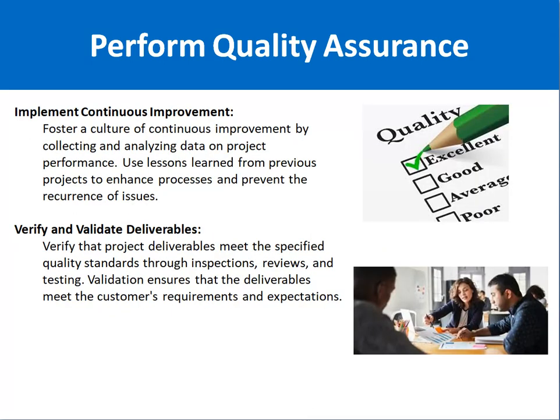Implement continuous improvement means fostering a culture of continuous improvement by collecting and analyzing data on project performance. Use lessons learned from previous projects to enhance processes and prevent recurrence of issues. It is not the case that you perform quality assurance only once — it is a continuous improvement process.